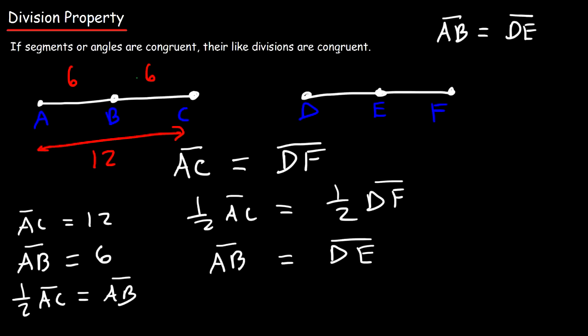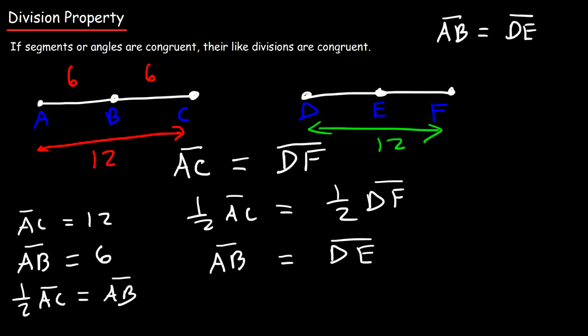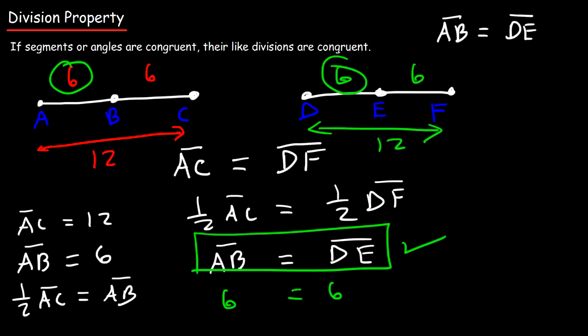We're given that AC is 12 and AC equals DF, so DF must also be 12. Since E is the midpoint of DF, DE and EF must each be 6. In our example, AB is 6 and DE is 6, so AB equals DE. Therefore, if segments or angles are congruent, their like divisions must also be congruent — and that's the division property.